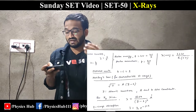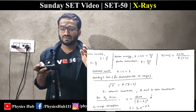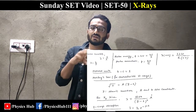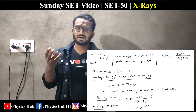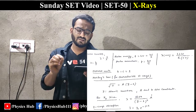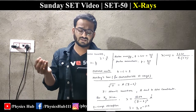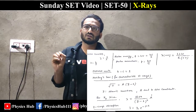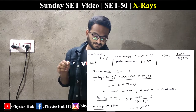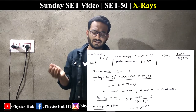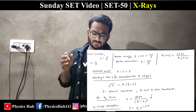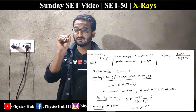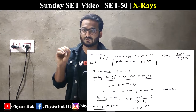For characteristic X-rays we use Moseley's law: the square root of frequency ν equals a(Z − b), where Z is the atomic number and b is called the screening constant. From this, λ for the Kα line equals 1200 divided by (Z − 1) squared, given in angstroms.